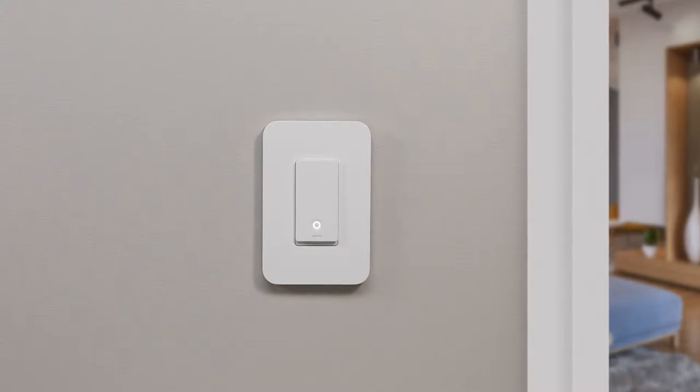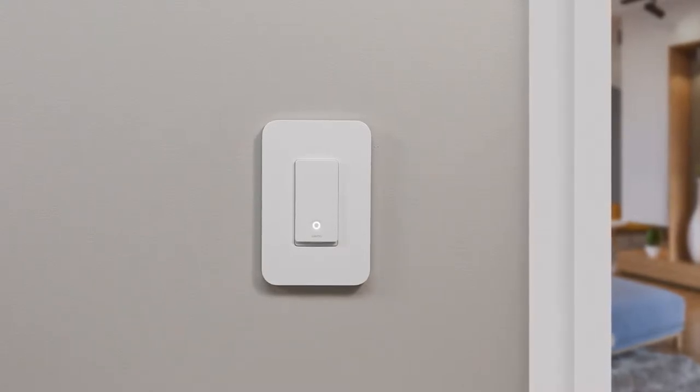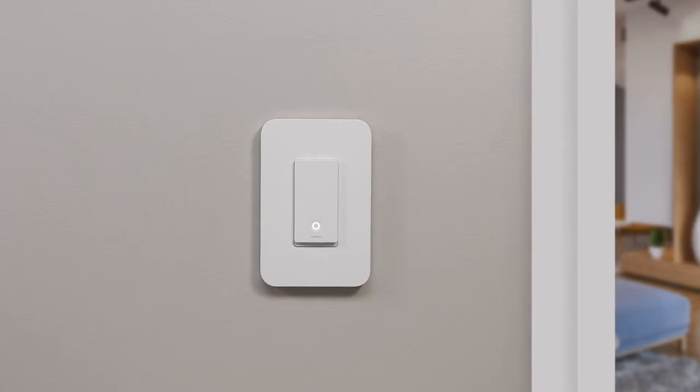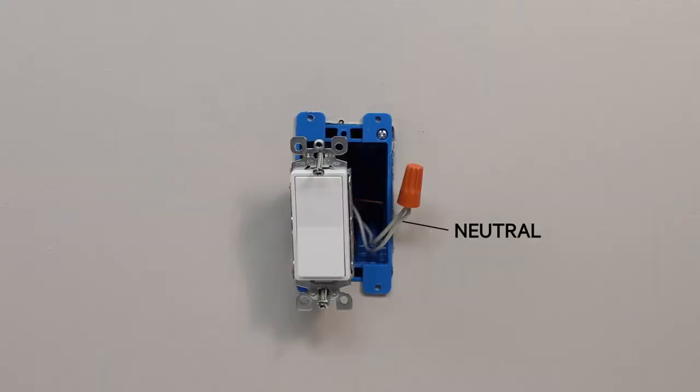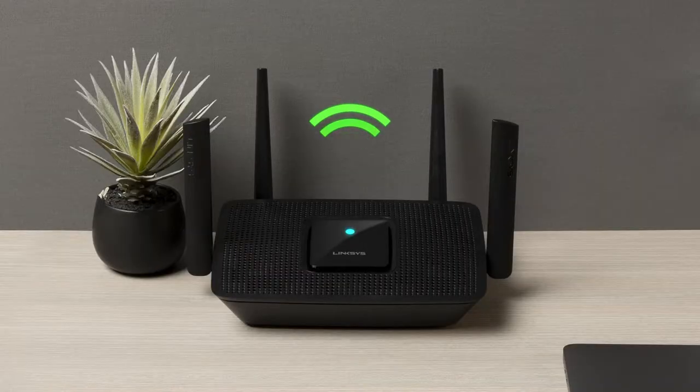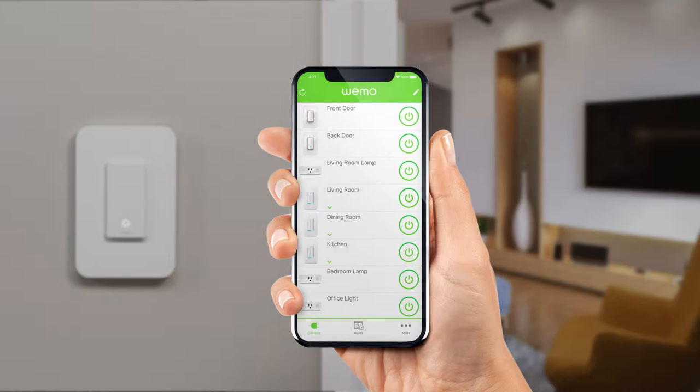In this video, we will demonstrate how to install your new light switch to replace a single-pole switch. First, the basics. Neutral wires and a strong Wi-Fi signal are required to install your light switch. Keep your mobile device with the Wemo app close by during the installation.